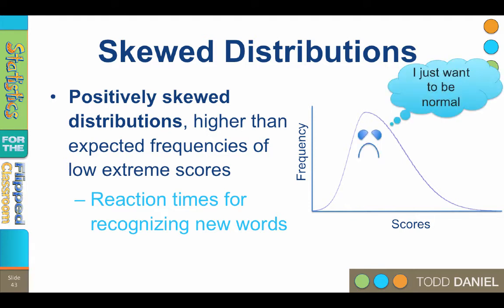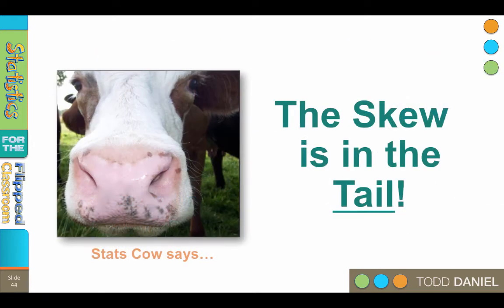How can you remember which direction is positive or negative when we talk about skewness? Stats Cow tells us that the skew is in the tail. Skewness is caused by outliers, extreme scores in the tail of the distribution. The direction that the tail is pulled out, positive or negative, is the direction of the skew.